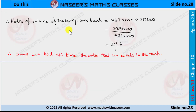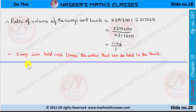Now we find the ratio of the volume of the sump to the tank. Volume of the sump is 33,91,200 and volume of the overhead tank is 10,73,880. After dividing this we get 1.46 by 1. Therefore the sump can hold 1.46 times the water that the tank can hold.